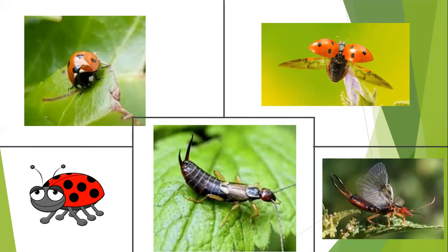Our friends the earwigs - a lot of people don't like them, but they're hugely important. They can actually fly, but they don't use their wings at all - their wings are dormant. There are over 2,000 different species and they live for about three years. They don't sting and they don't go near your ear - they're actually harmless. They use the pinchers at the back for protection. The amount of work they do on leaves, getting to little insects, is massive.